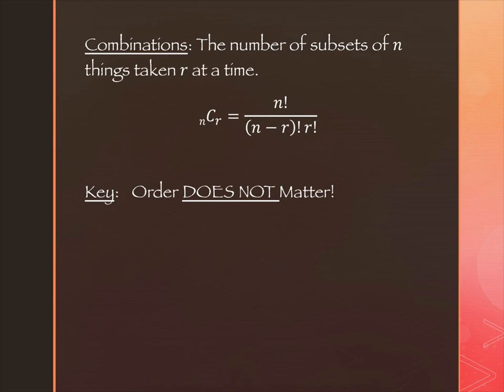So a combination is the number of subsets of n things taken r at a time. That part looks very similar. We've got a C happening, right, instead of a P. C for combination instead of P for permutation.